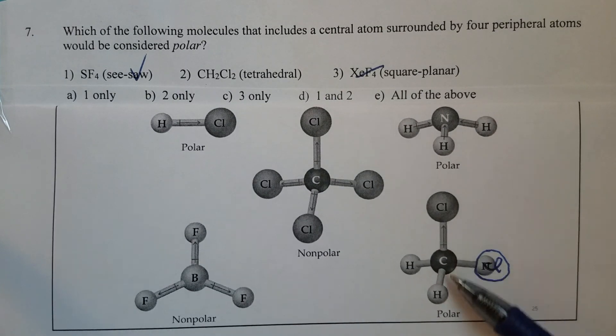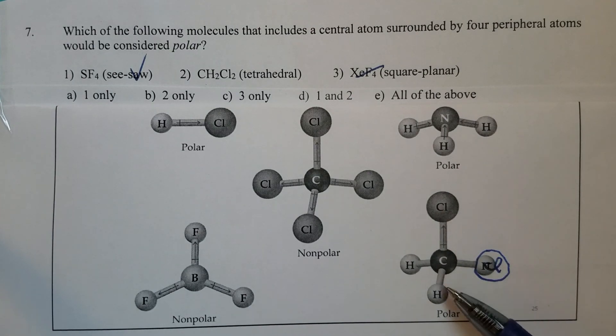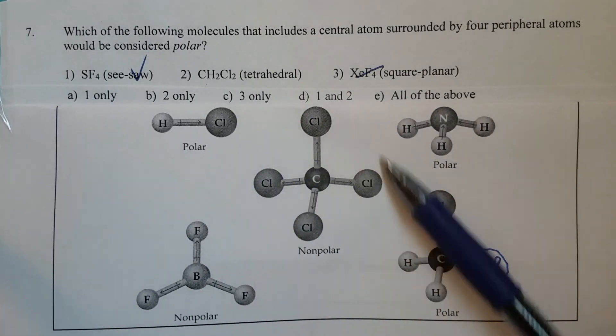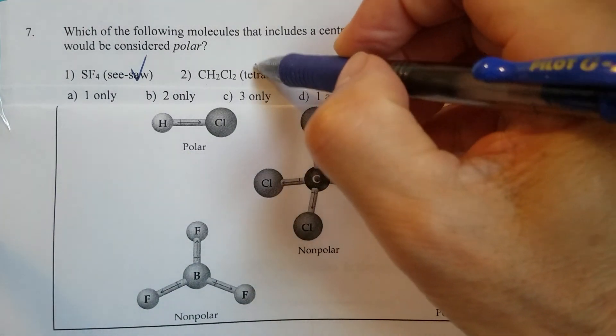So therefore, the bond polarity of a C-Cl bond and a C-H bond, they are not the same. If they are not the same, the symmetrical structure or geometry doesn't help. So therefore, this one is still polar.